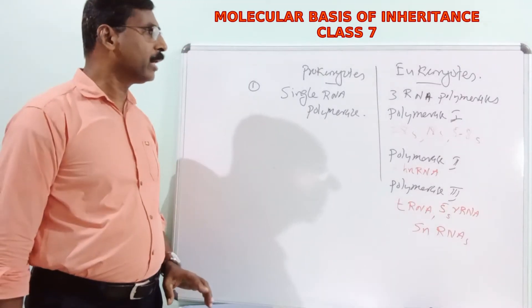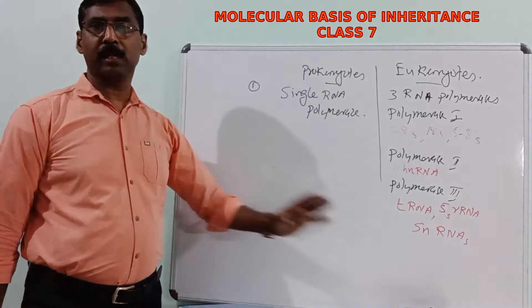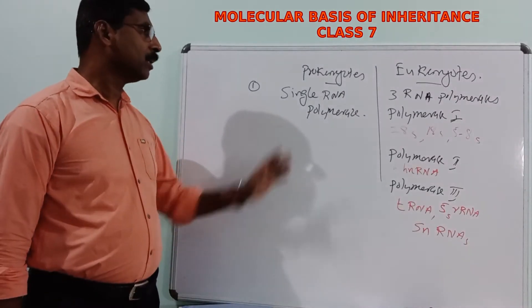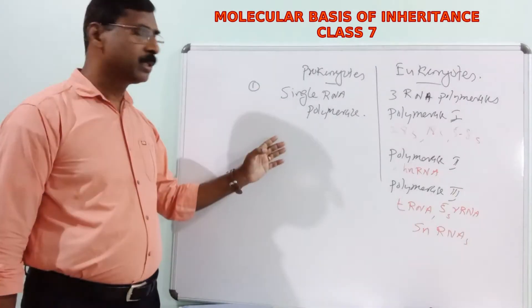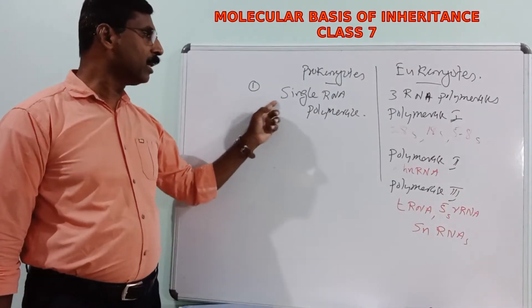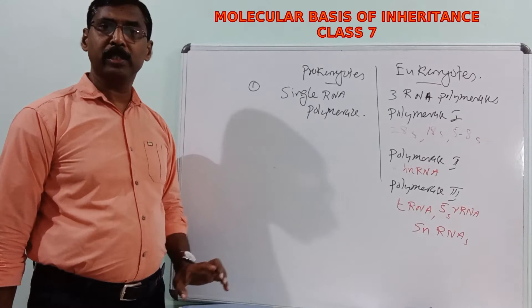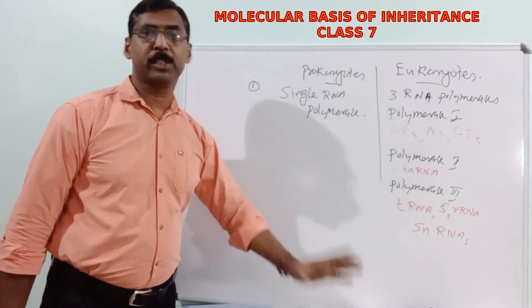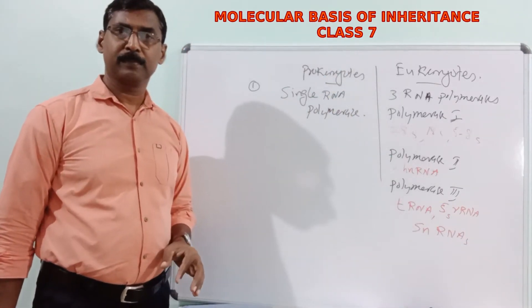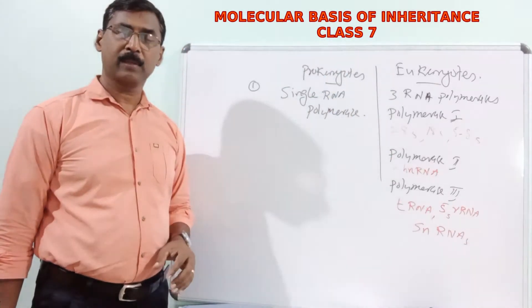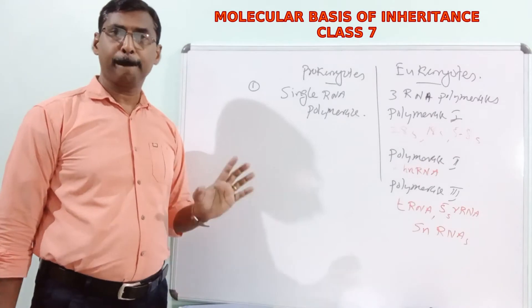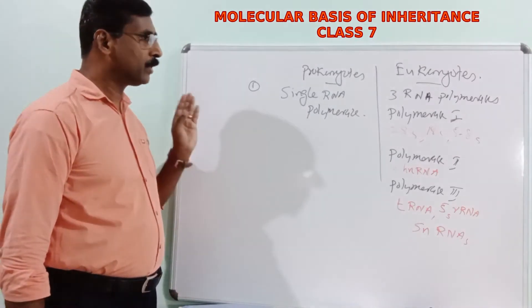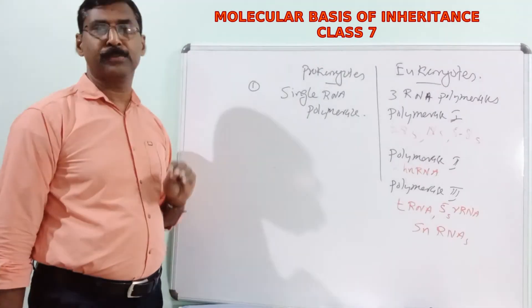So in eukaryotes, these three polymerases are required, whereas in prokaryotes, the single RNA polymerase performs all these functions. This is the first difference between prokaryotic and eukaryotic transcription.